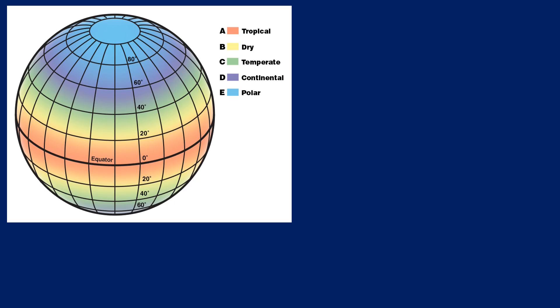His categories were based on the temperature, the amount of precipitation, and the times of year when precipitation occurs. The categories were also influenced by a region's latitude — the imaginary lines used to measure the Earth from north to south from the equator. Today, climate scientists split the Earth into approximately five main types of climates.